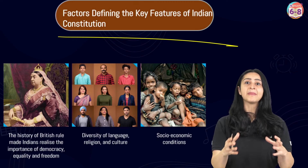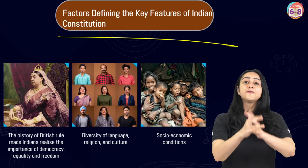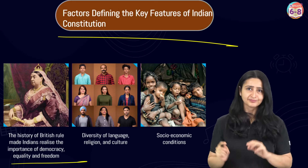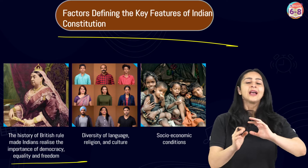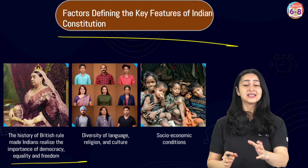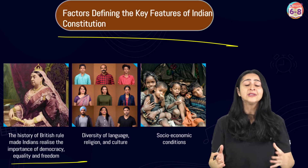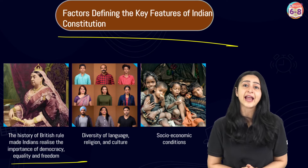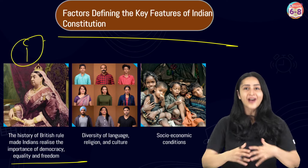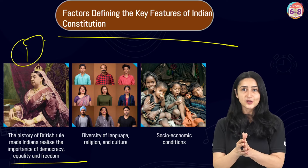What led us to making the features of the constitution the way it is today? The first factor was India's history. After being ruled by the British for nearly 200 years, the makers of the constitution realized the utmost importance of democracy, equality, and freedom. This was a very big factor in defining the features of our constitution.